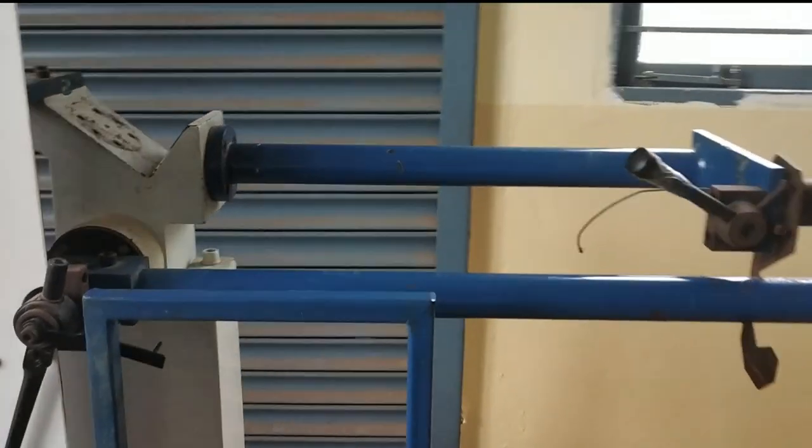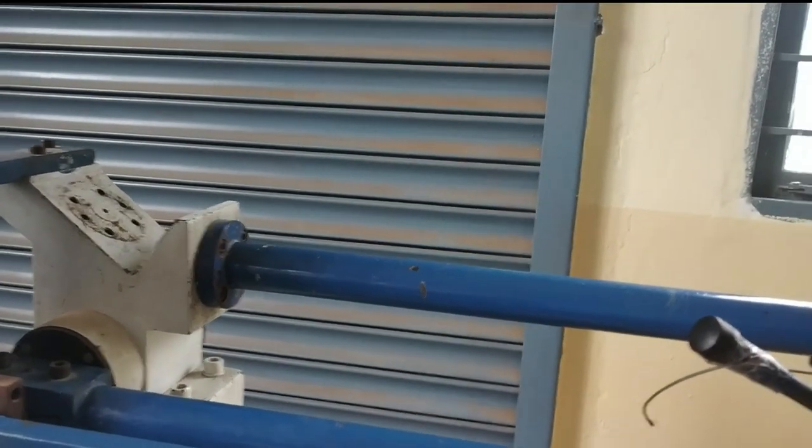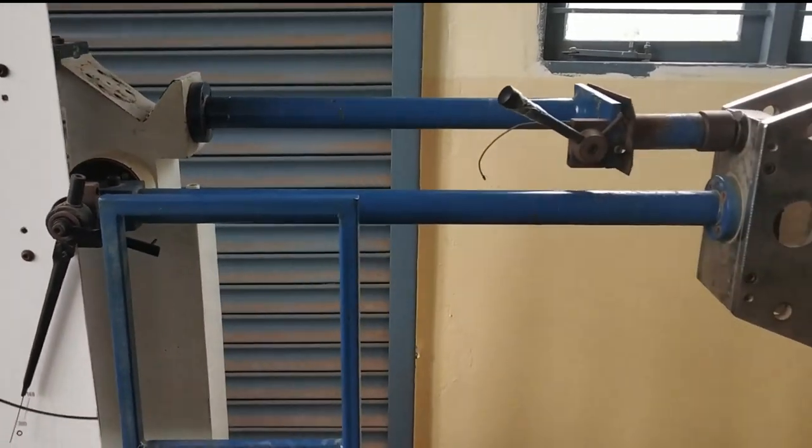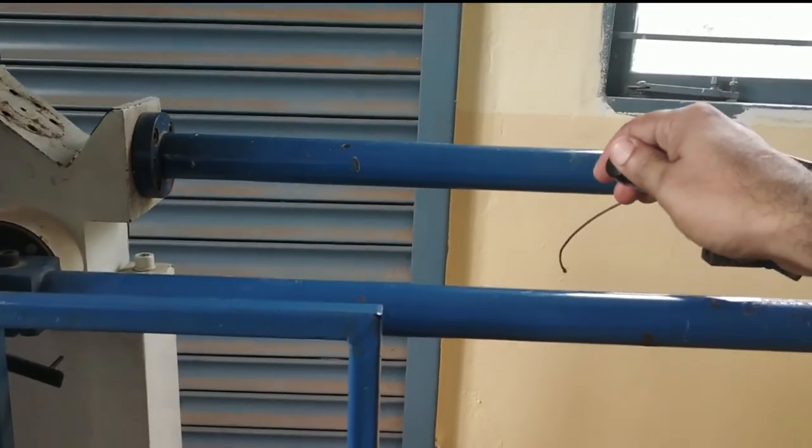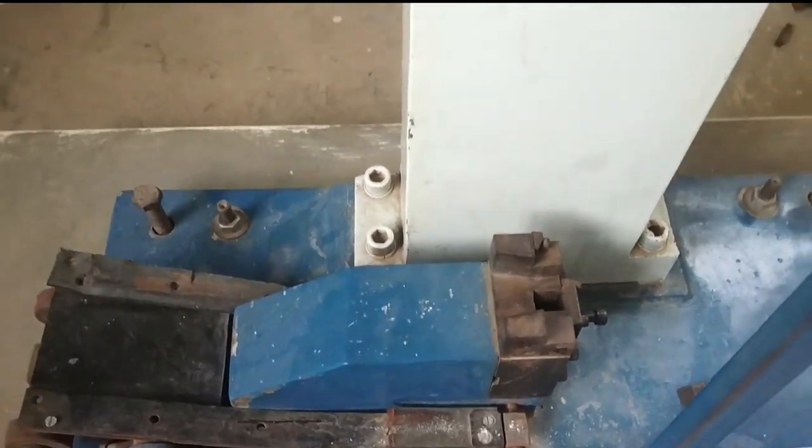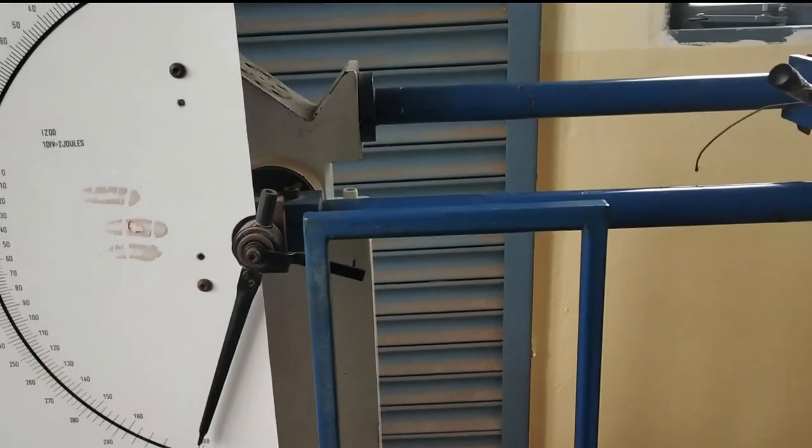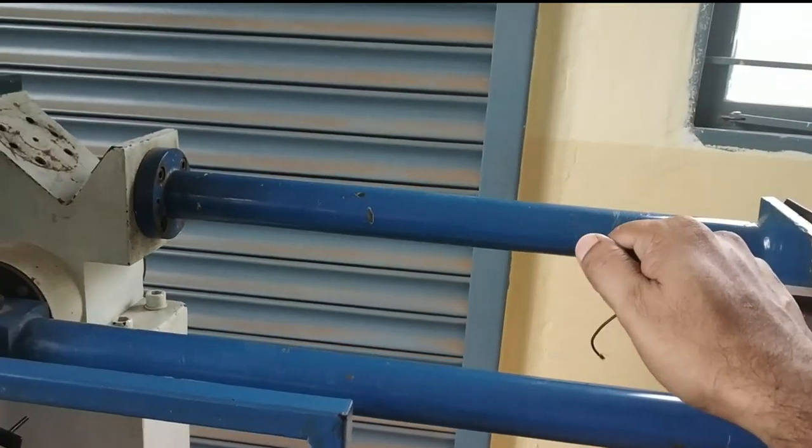Now, remove the safety lock in order to find out the R1 value. Release it without any specimen over that of the platform. There is no specimen over the platform. Release the lever.